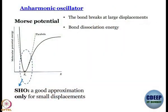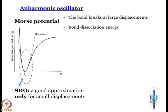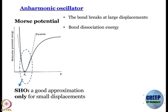So the correct potential for a diatomic molecule has to be something like this. For large values of x it has to turn and reach a saturation. This kind of an oscillator is called an anharmonic oscillator.